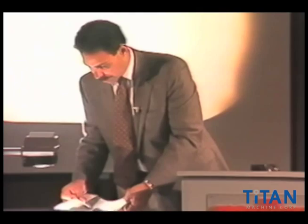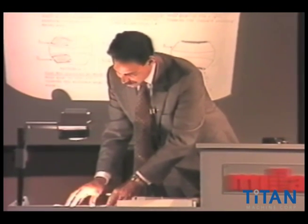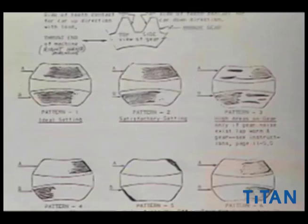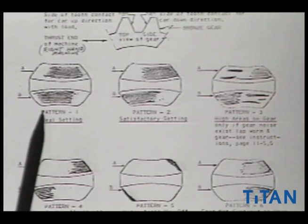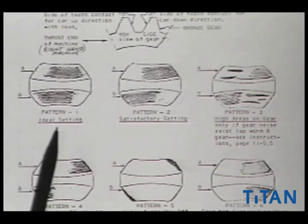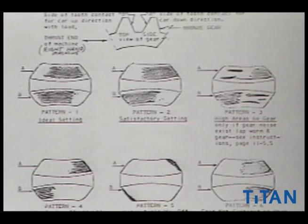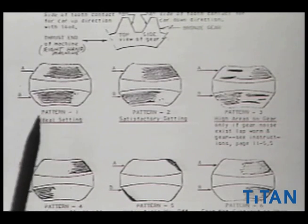This is out of another repair manual. Some of you may even have one of these. If you take a look at the very first patterning of the gear teeth, you'll notice they call this an ideal setting. This is a different manufacturer. As a matter of fact, this is an elevator manufacturer. The other one was not an elevator gear manufacturer, just worm gearing. This shows more of what you probably see out in the field, or optimum of what you'd like to see out in the field.